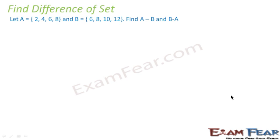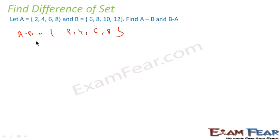Now let's do another example to further understand difference of sets. A is {2, 4, 6, 8} and B is {6, 8, 10, 12}. We need to find A minus B. Using the normal approach, write all elements of A, then subtract the common elements. 6 is common — subtract. 8 is common — subtract. 10 is not common. 12 is not common. So A minus B is {2, 4}.